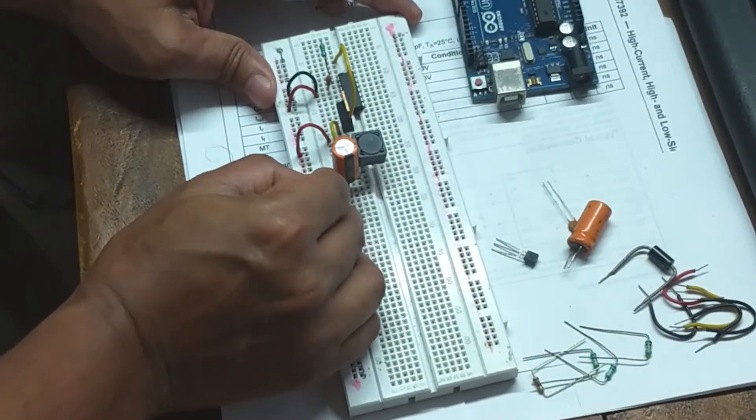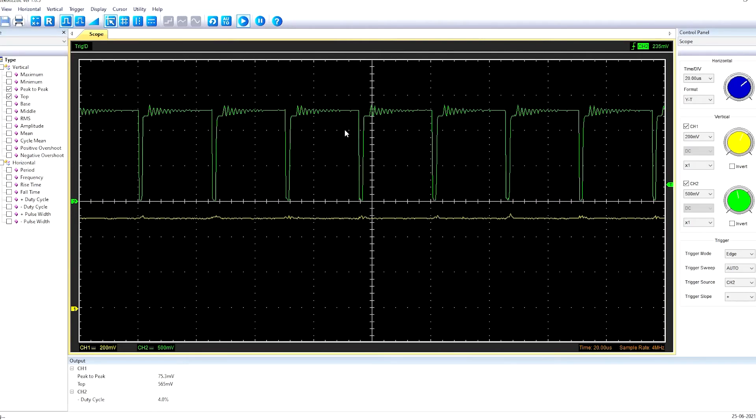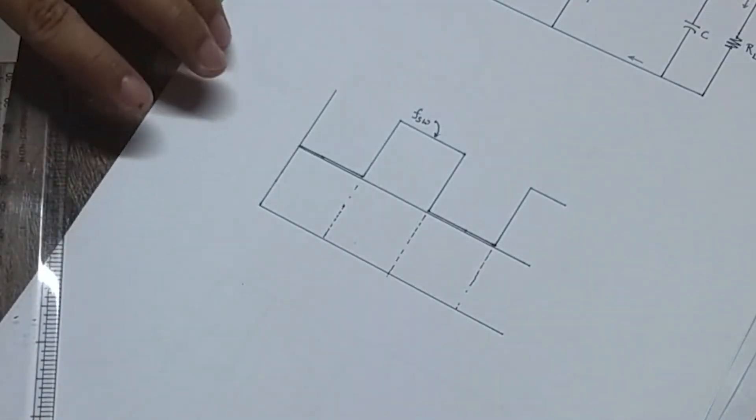But if you use a lower value of inductor, then you will notice a large ripple in the output. On the other hand, if you use a very large inductor, the output will be smooth, but the efficiency will be lowered.